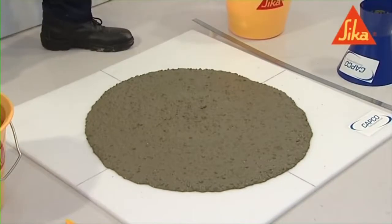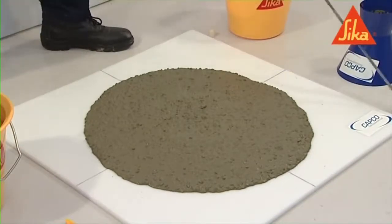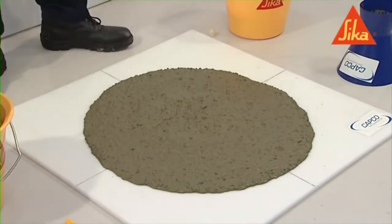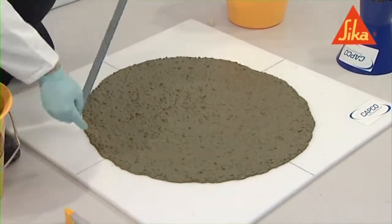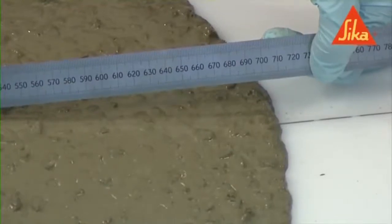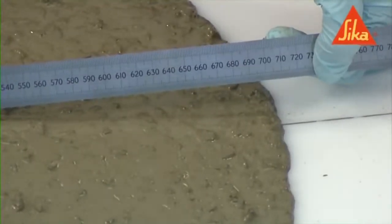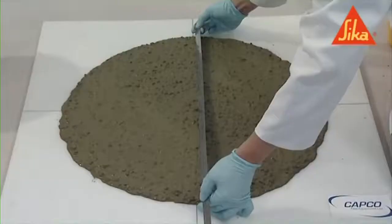Without disturbing the base plate or concrete, measure the largest diameter of the flow spread and record as dm to the nearest 10 mm. Then measure the diameter of the flow spread at right angles to dm to the nearest 10 mm and record as dr.